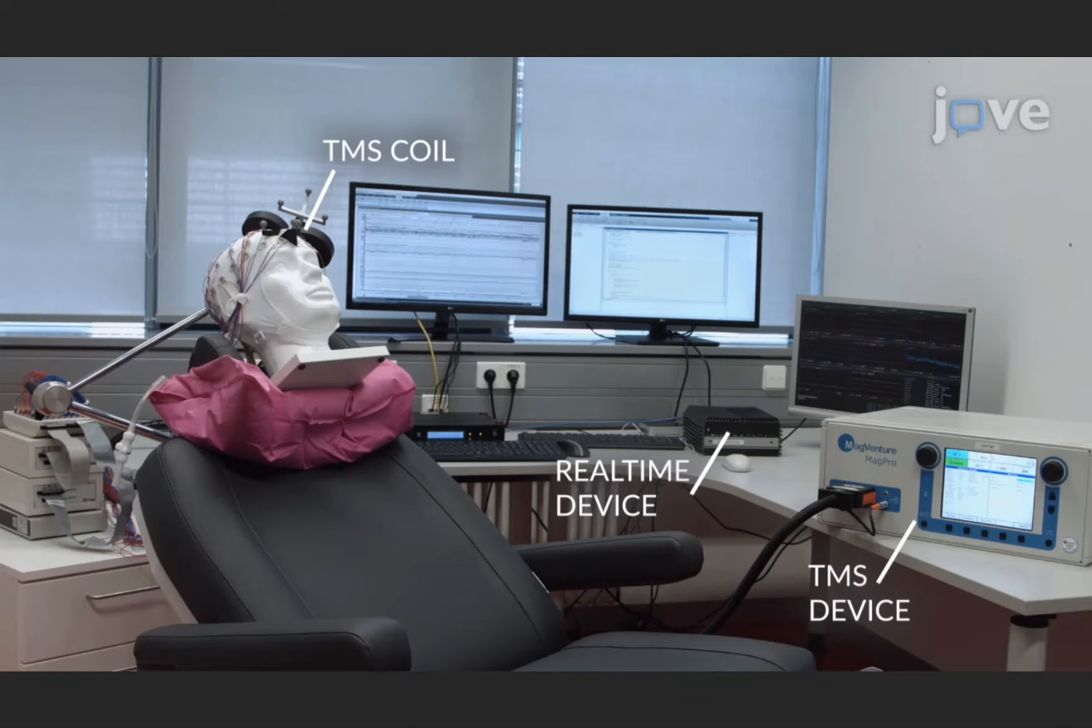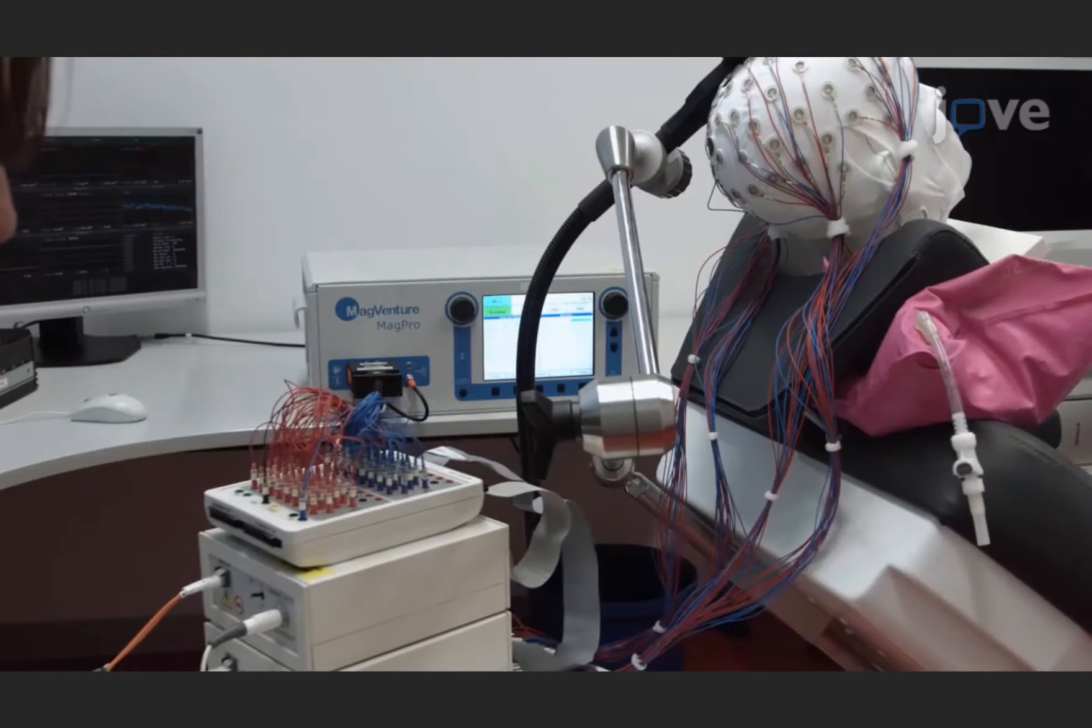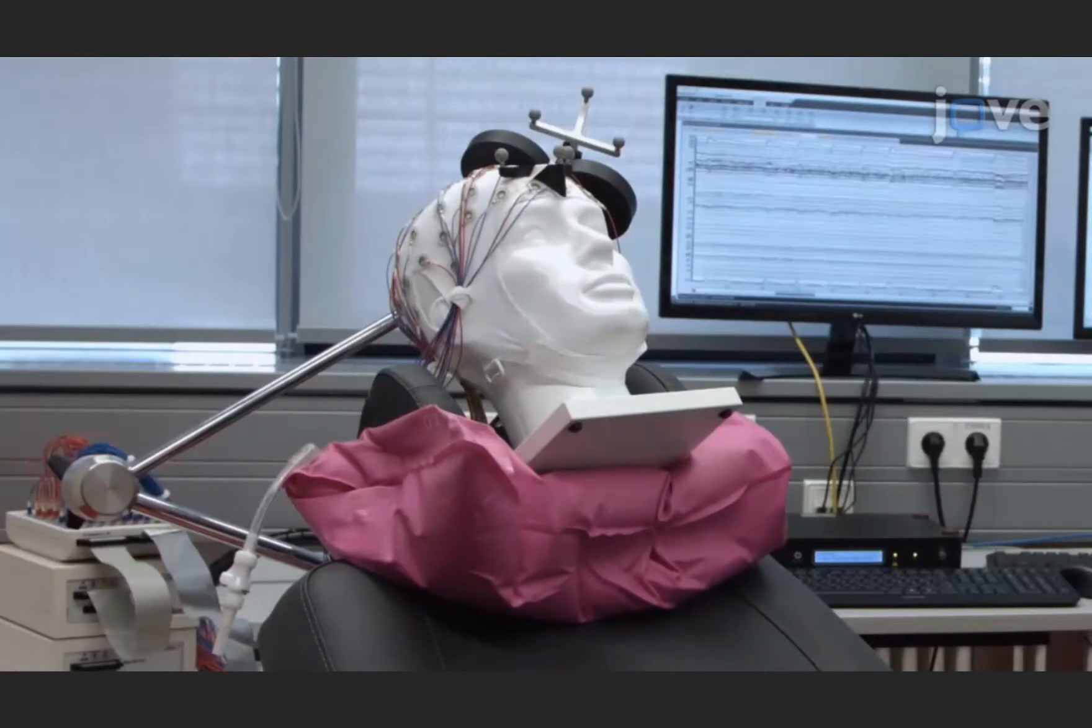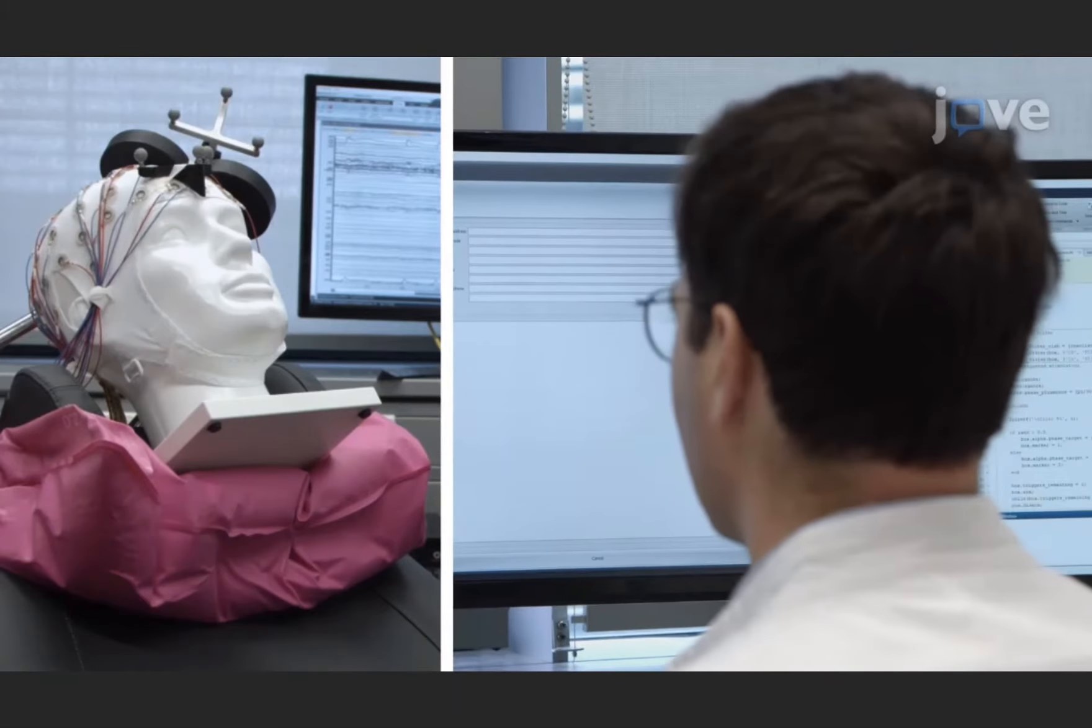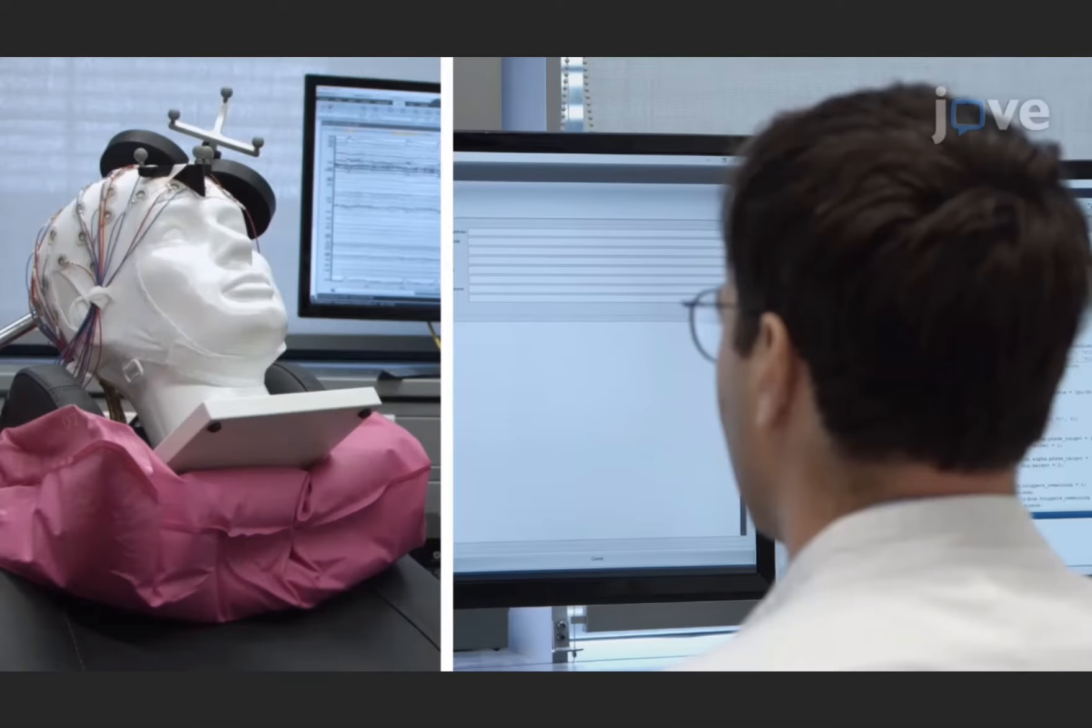The real-time device analyzes the EEG oscillations and sends a trigger signal to the TMS stimulator when a predetermined trigger condition is met to pass a brief current pulse through the TMS coil that is placed on the head. During the experiment, the position of the coil on the head will be monitored with a neural navigation device.